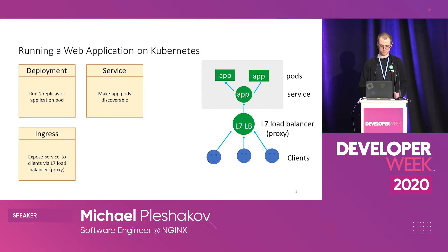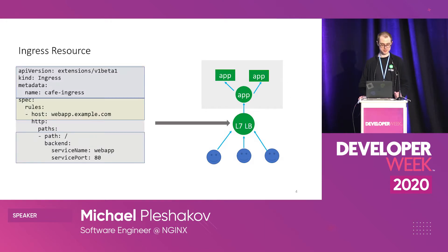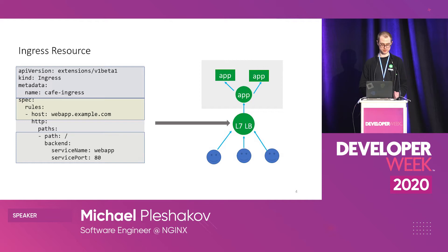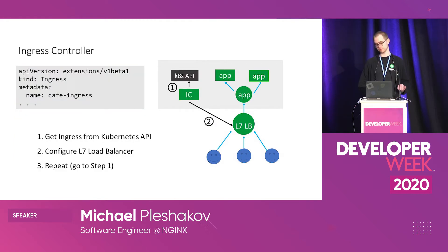Let's take a closer look at the ingress resource. Every Kubernetes object can be represented as YAML. This is a YAML manifest for the ingress resource. We have the standard kind, metadata, and name fields, and then the load balancing configuration. Here we define one rule: we want to route user requests with the host header webapp.example.com and with a path slash to our web application. That's what this ingress resource defines, and the next step is to apply this ingress resource to a load balancer.